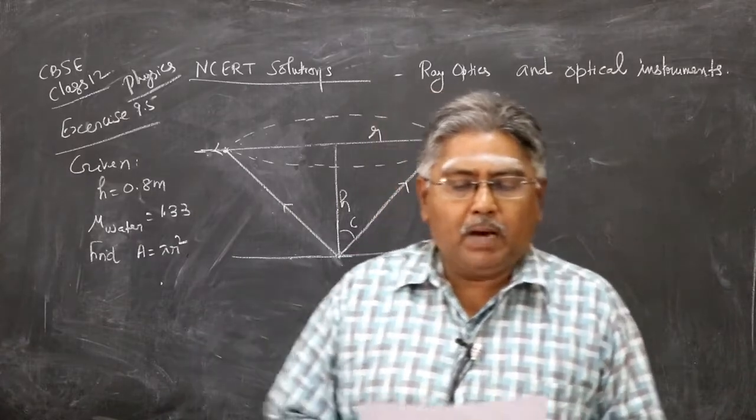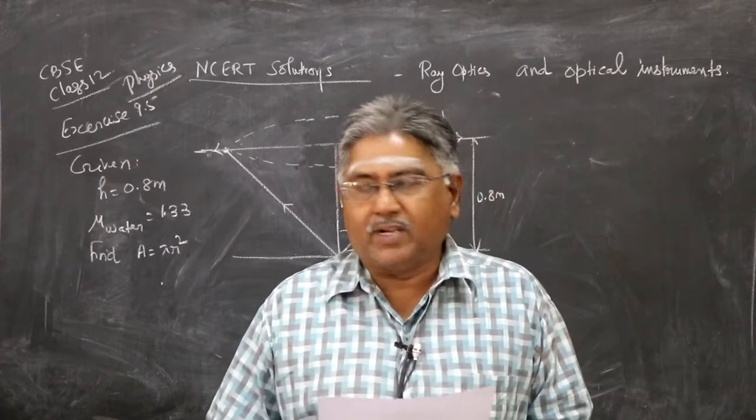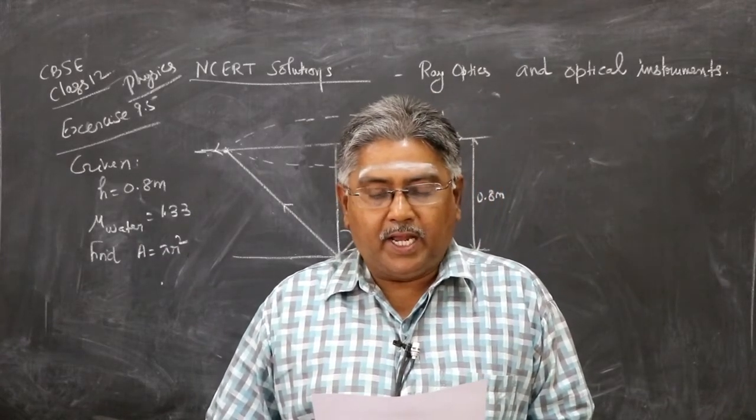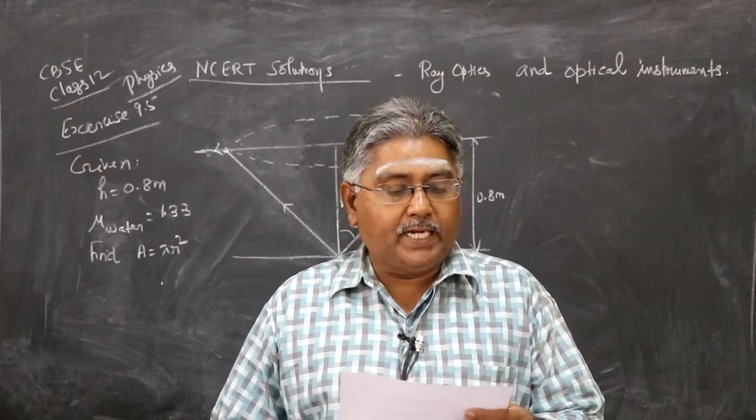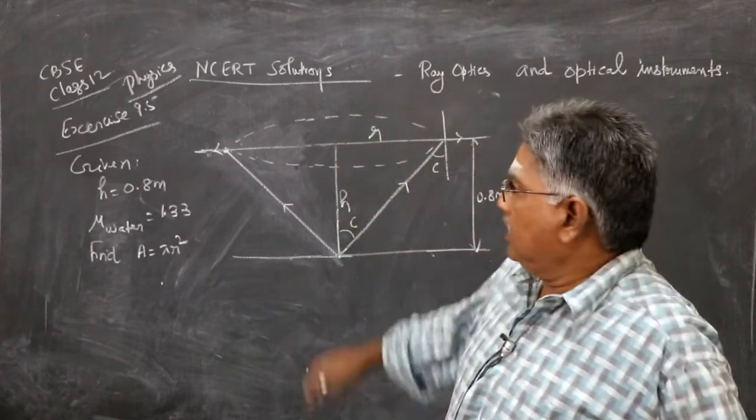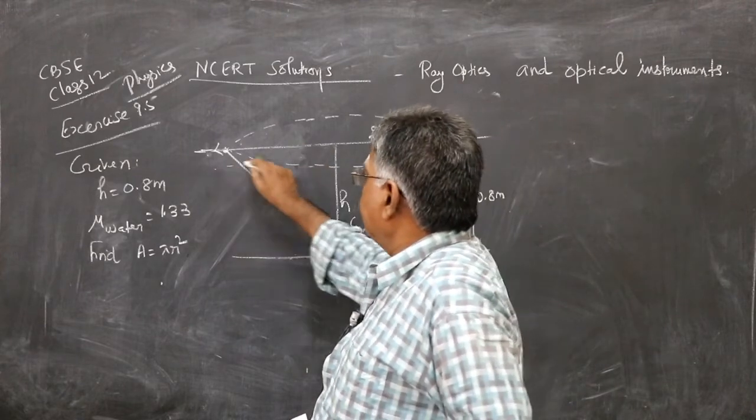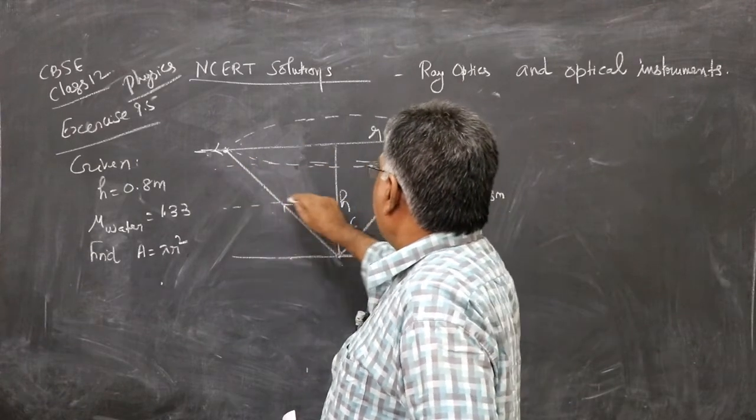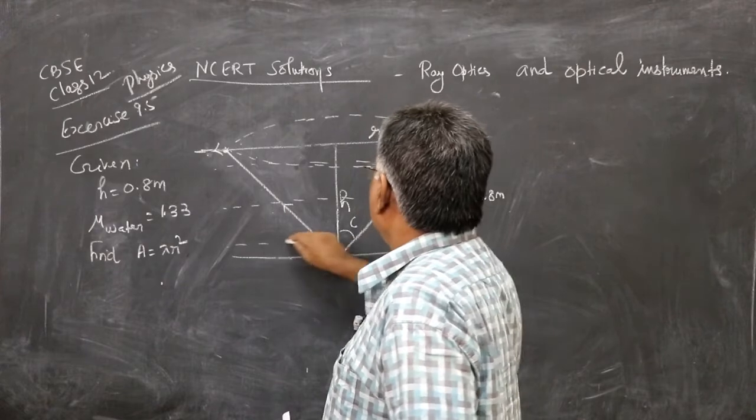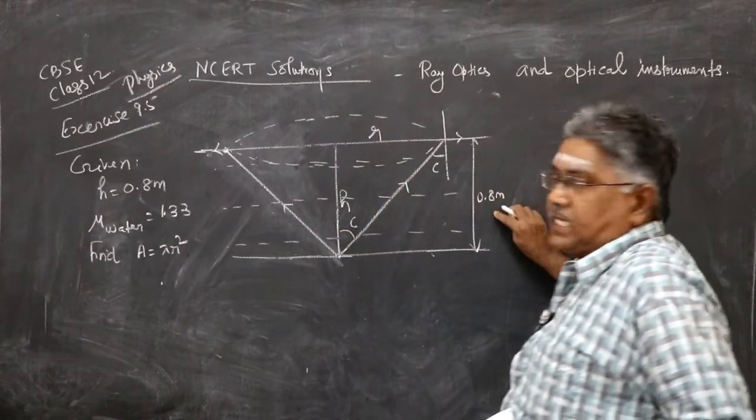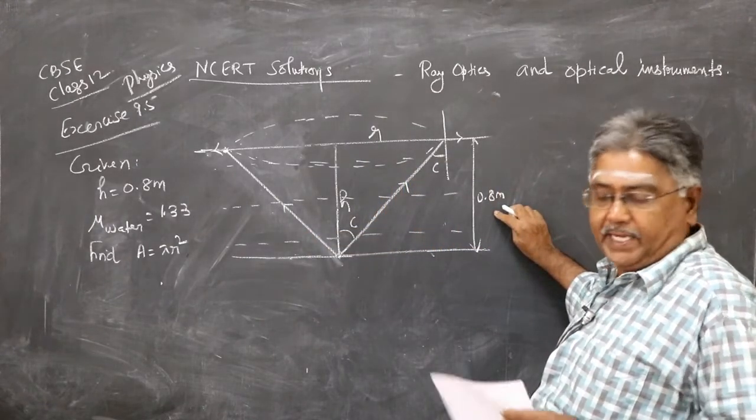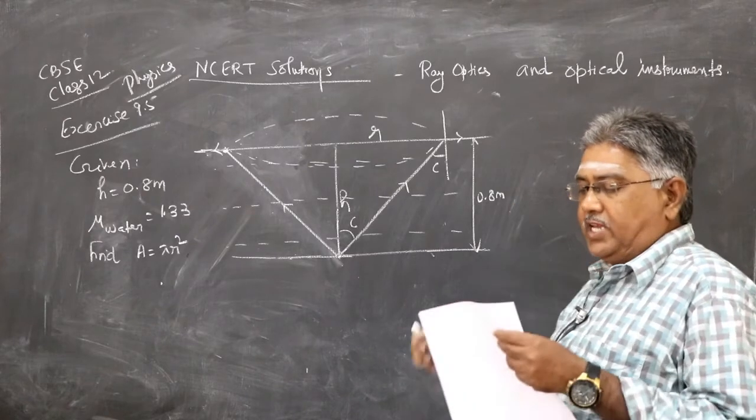A small bulb is placed at the bottom of a tank containing water to a depth of 80 centimeters. The tank contains water, 80 centimeters, let's say 0.8 meters. What is the area of the surface of water through which light from the bulb...